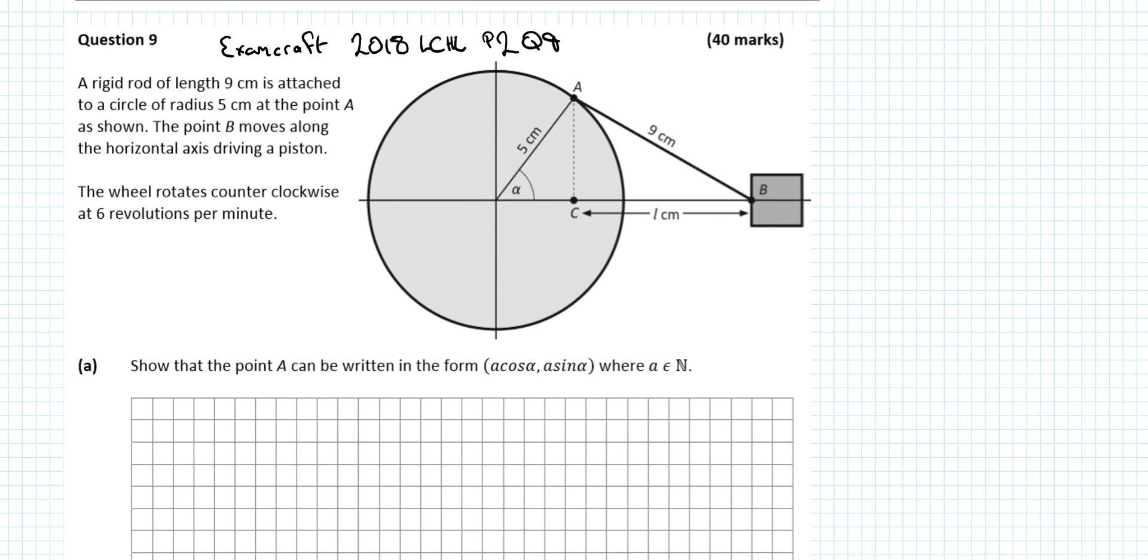In this video I'll be looking at ExamCraft 2018 Leaving Certificate Higher Level Maths Paper 2 Question 9. A rigid rod of length 9 cm is attached to a circle of radius 5 cm at a point A as shown. Point B moves along the horizontal axis driving the piston. The wheel rotates counter-clockwise at 6 revolutions per minute.